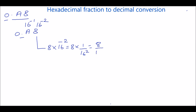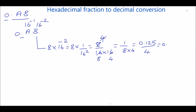That is 8 by 16 into 16, which simplifies to 1 by 8 into 4. So 1 by 8 can be written as 0.125, divided by 4. Dividing 0.125 by 4 gives 0.03125.